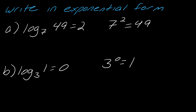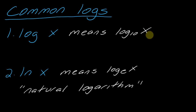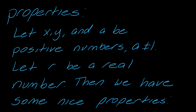So the next thing I just want to brush up on are some common logs. If you see log X without a base number, that means log base 10 of X universally — this is what it means on calculators, this is what it means everywhere else. If you see log X, it means log base 10. And the other one is natural log: ln of X means log base E and we call it the natural logarithm. Now, X, Y and A must be positive numbers, A is not equal to one, and R will be a real number.